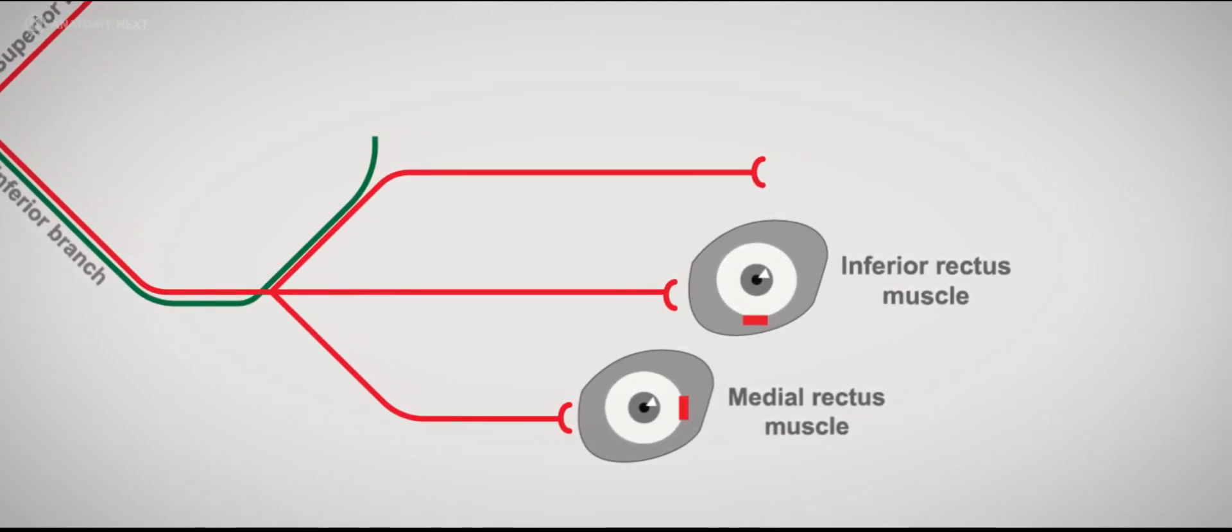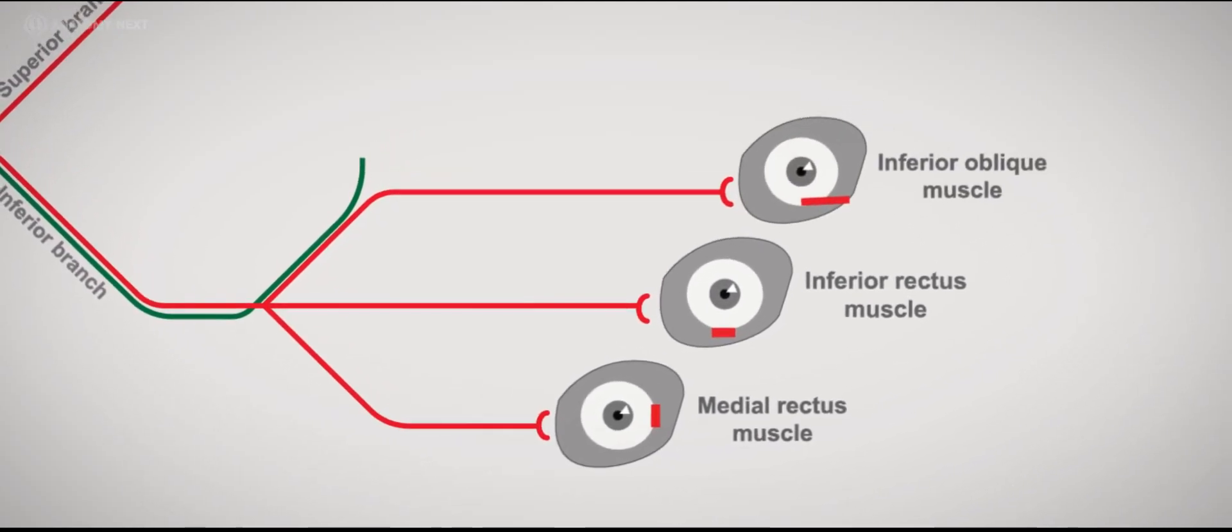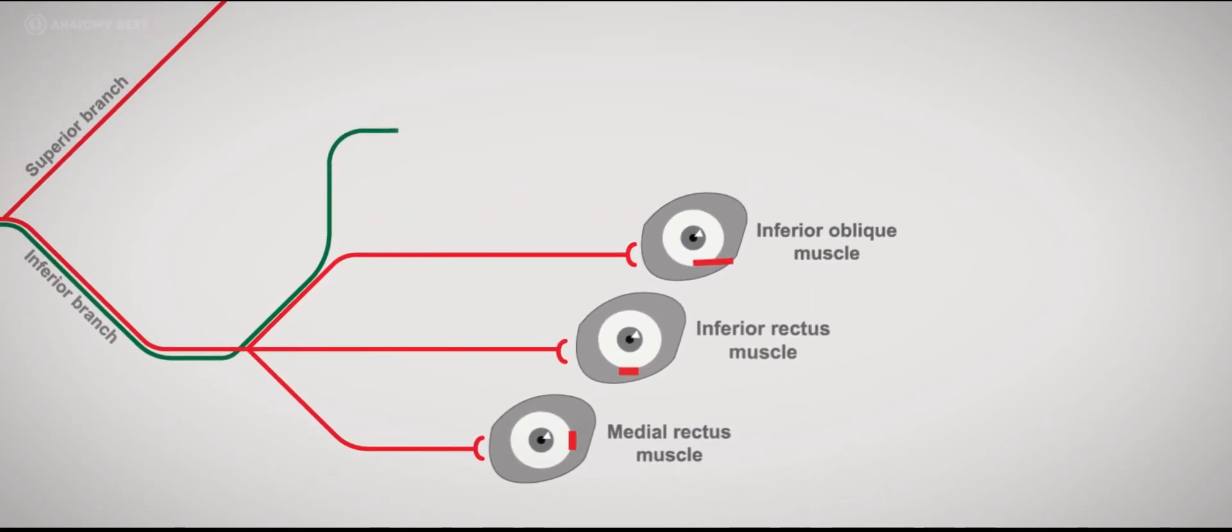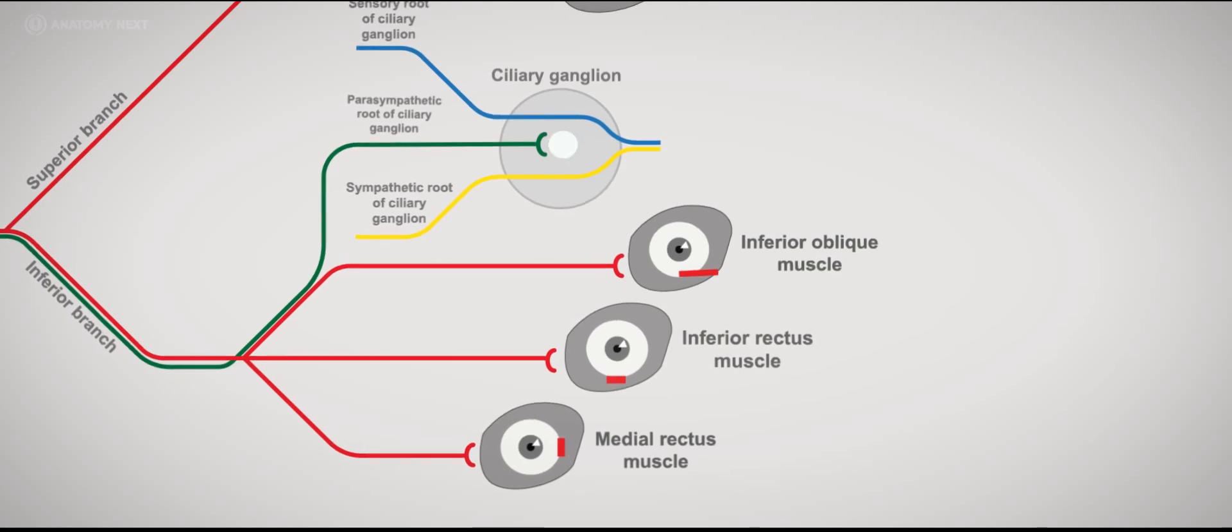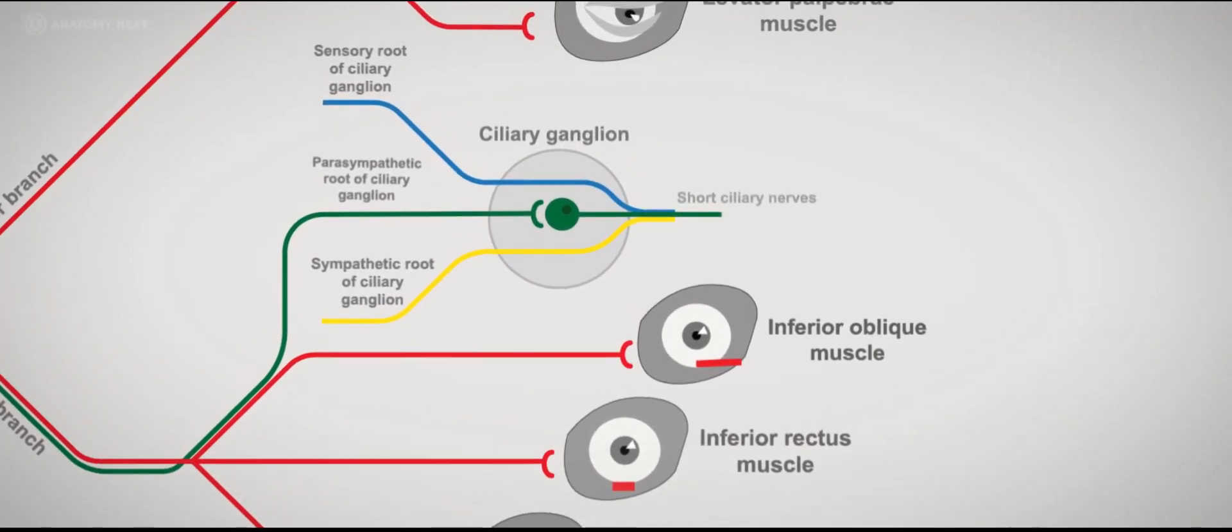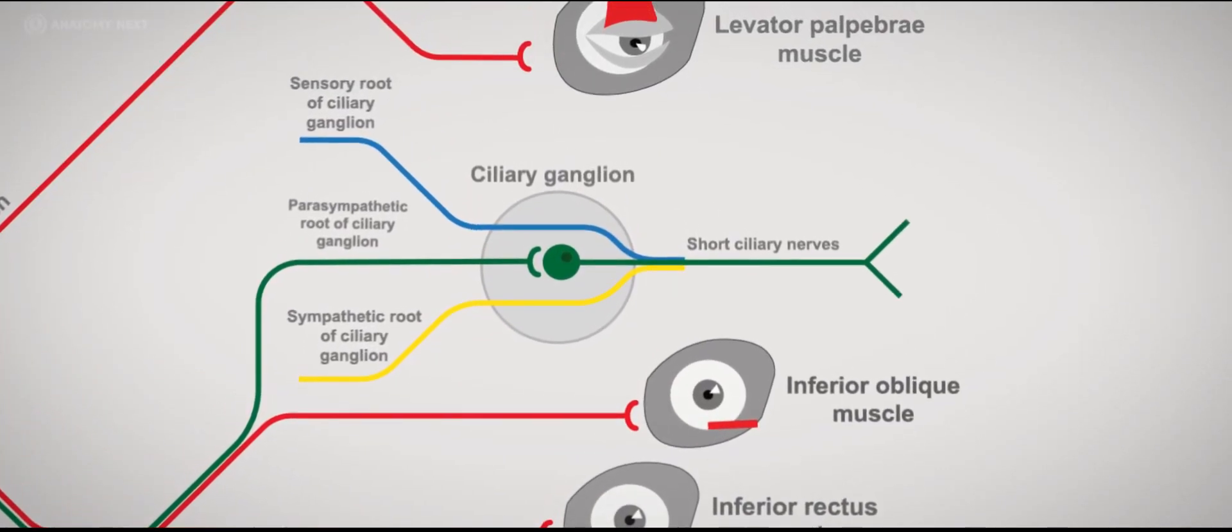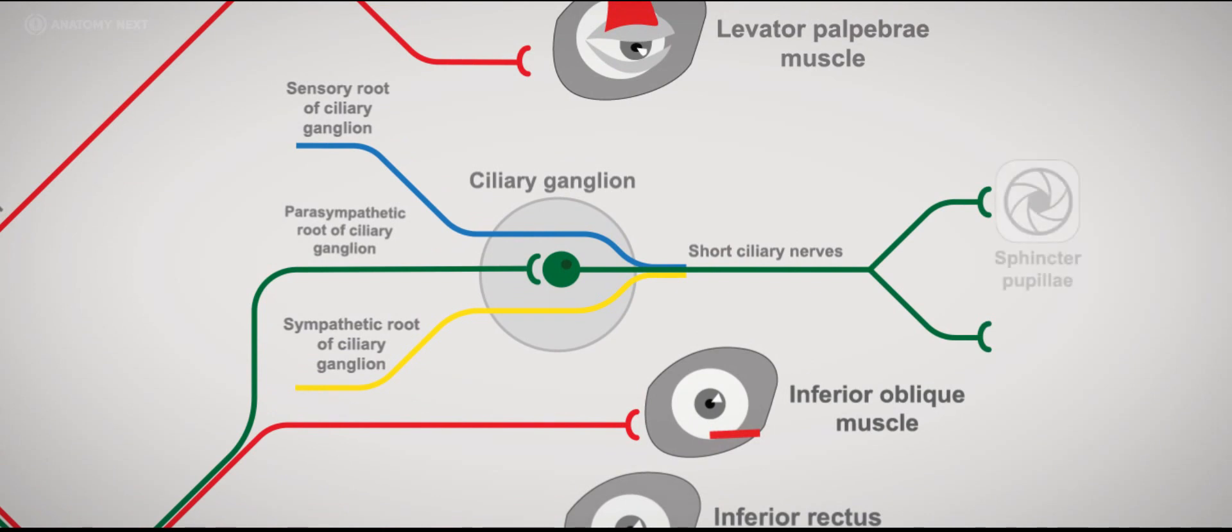The lateral branch enters the orbital surface of the inferior oblique muscle and communicates with the ciliary ganglion to distribute the preganglionic parasympathetic fibers to synapse with neurons in the ciliary ganglion. The postganglionic parasympathetic fibers of the ciliary ganglion eventually innervate the sphincter pupillae muscle and the ciliary muscle.